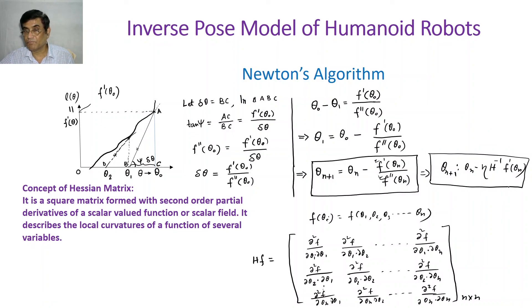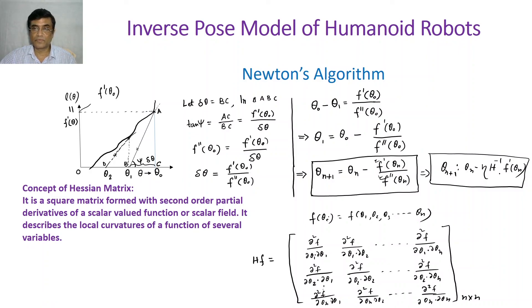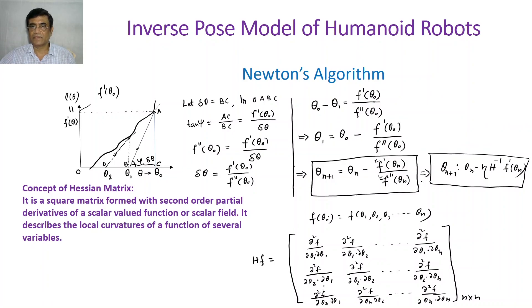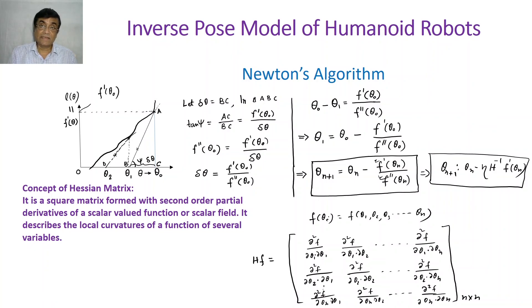This is a modified Newton's method that uses the Hessian matrix concept and retains quadratic convergence. But if we want to avoid all the business of calculating derivatives altogether, there is another variant we are going to discuss in the next class. Till then, stay safe and bye-bye.